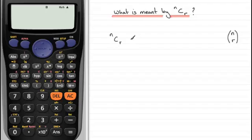NCR means N factorial, divided by N minus R factorial, multiplied by R factorial.